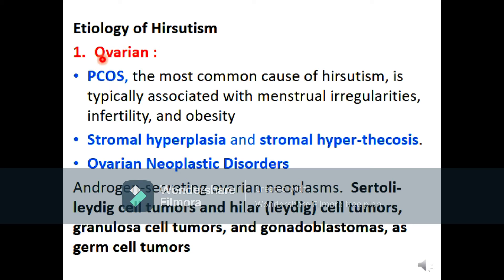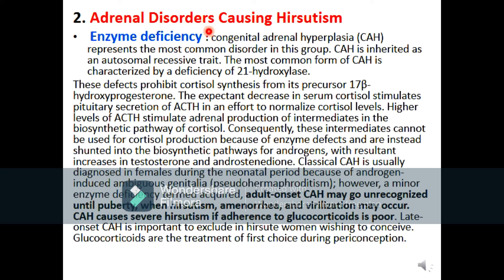Etiology of hirsutism — ovarian causes: The most common is polycystic ovary syndrome (PCOS). Others include stromal hyperplasia, stromal hyperthecosis, androgen-secreting ovarian neoplastic disorders, and androgen-secreting ovarian tumors. Regarding adrenal disorders, enzyme deficiency as in congenital adrenal hyperplasia (CAH), also known as adult-onset CAH, may go unrecognized until puberty.